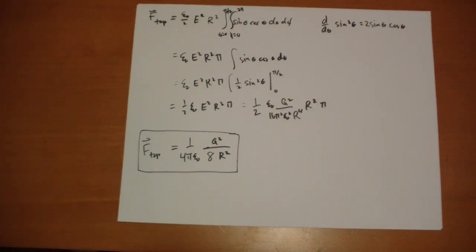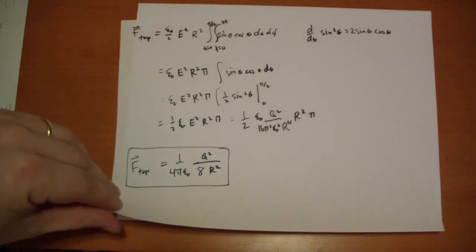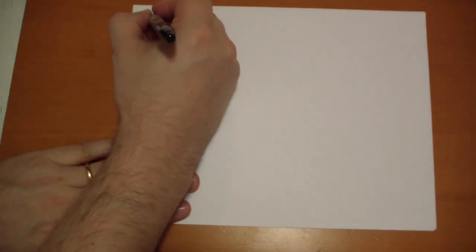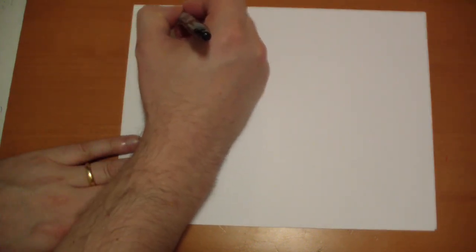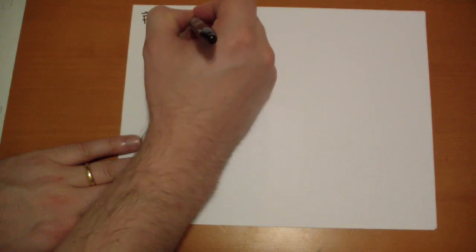So we just solved for the force on the top part of the half sphere. Now we're going to solve for the force on the disk. The force on the disk is going to be the integral on the surface of T tensor dot dA vector.